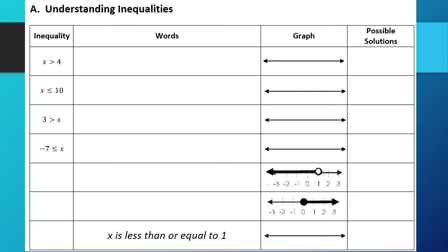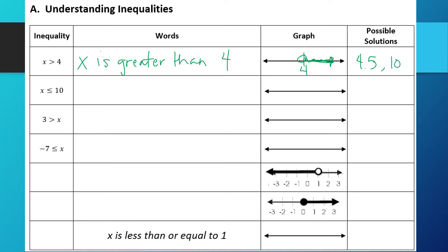Let's look at some examples covering what the words are for those inequalities, what the graph looks like, and some possible solutions. The first one: x is greater than 4. When I graph that, I put 4 on the number line with an open circle, and shade to the right since the numbers greater than 4 are to the right. Possible solutions include 4.5, 10 — any number greater than 4.